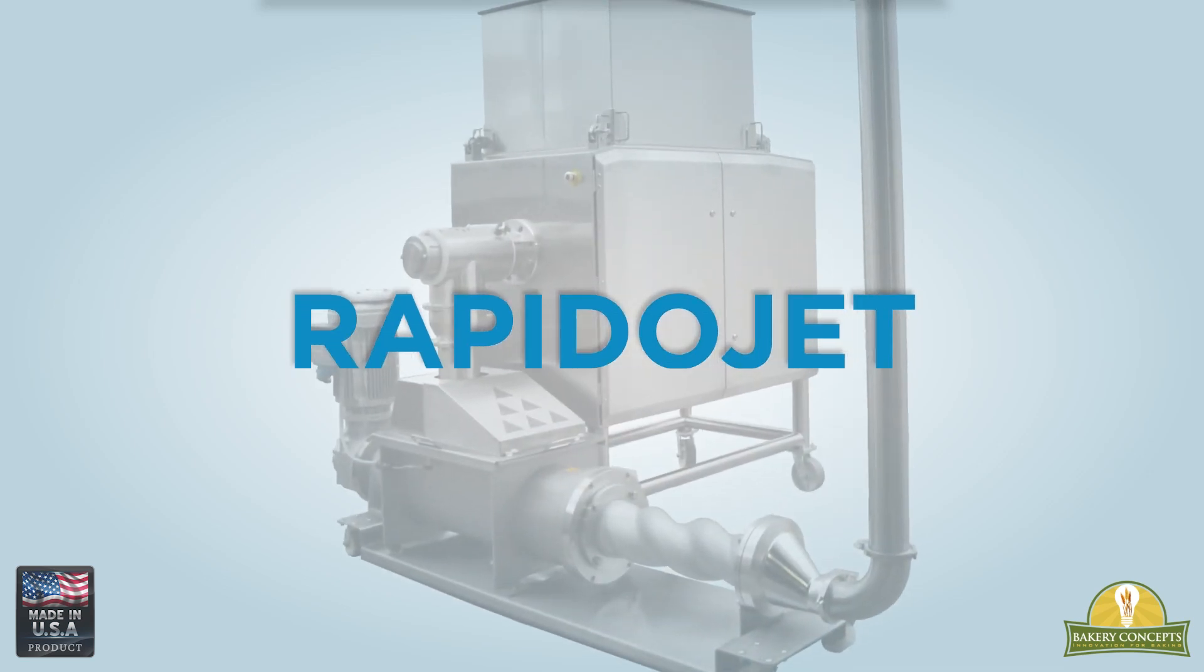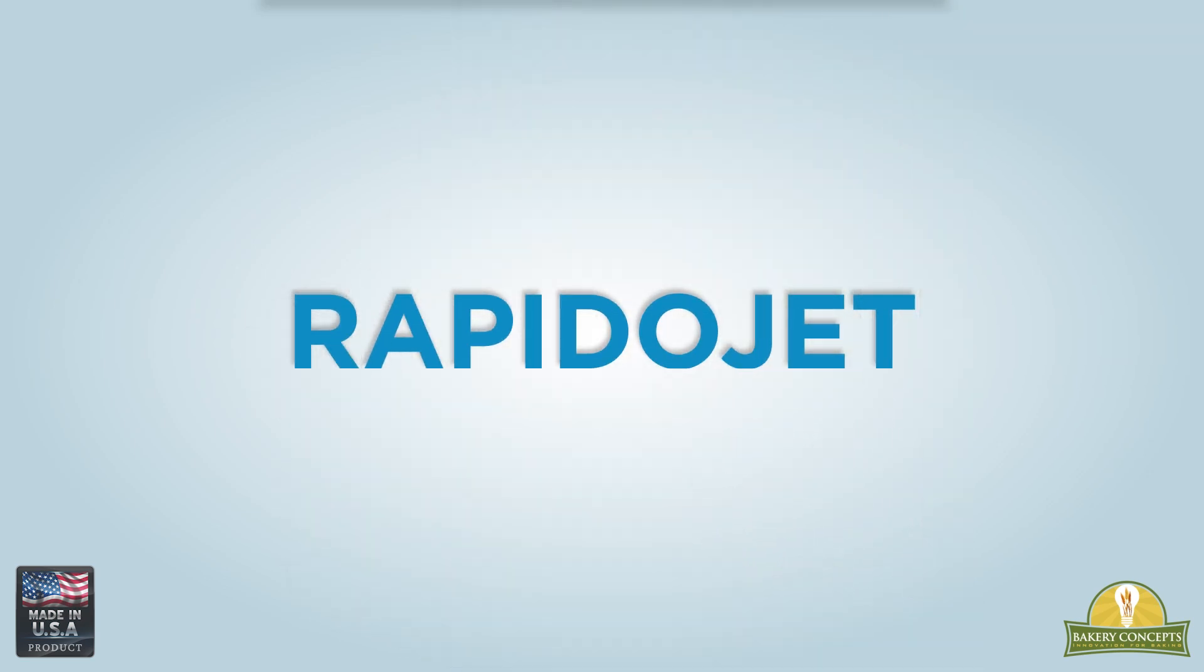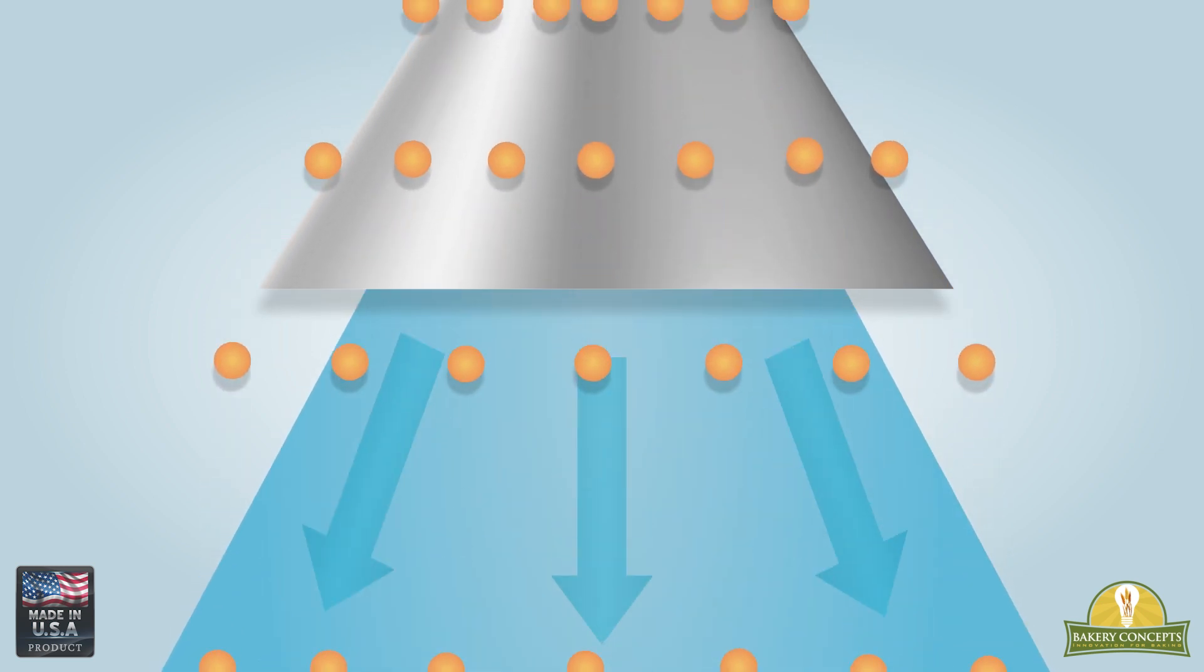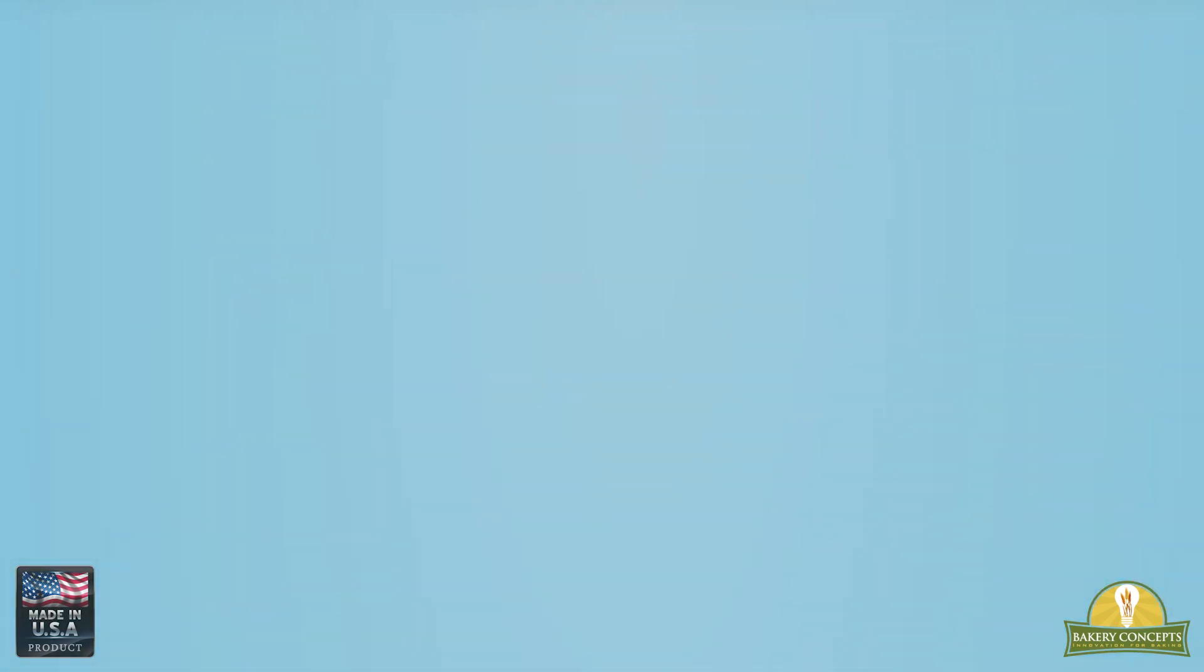RapidoJet achieves radical hydration through high-pressure water delivery. The free-falling dry ingredients are delivered via gravity to the high-pressure water stream where it undergoes this process.